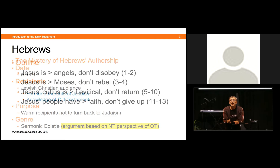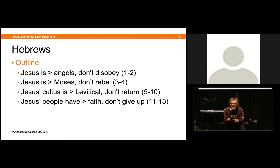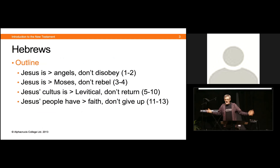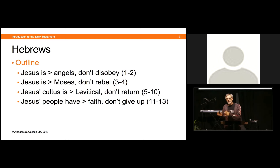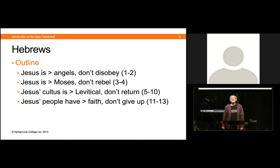The argument of Hebrews: First, Jesus is greater than the angels. Because it's not a letter, he's already starting his first point — God spoke before through angels, now he's spoken through Jesus. Then he argues Jesus is bigger than Moses. After that, the cultic religious system — all the Levitical sacrifices, offerings, and ceremonies — and the practices Jesus has brought in are much better than the Levitical ones.